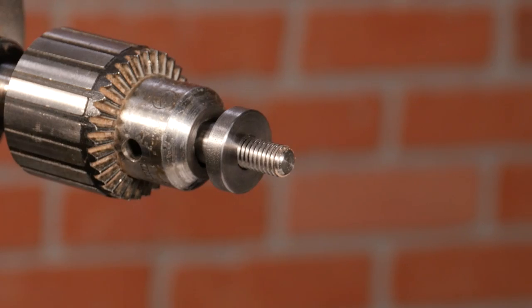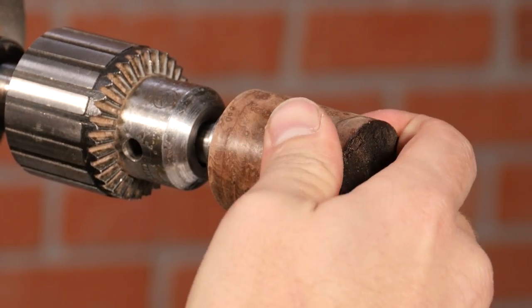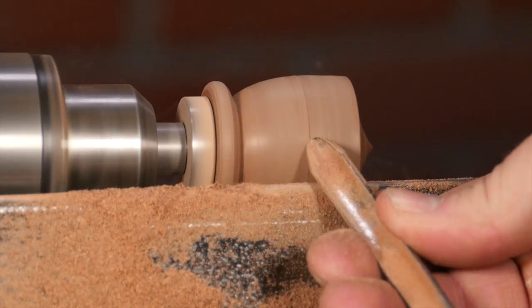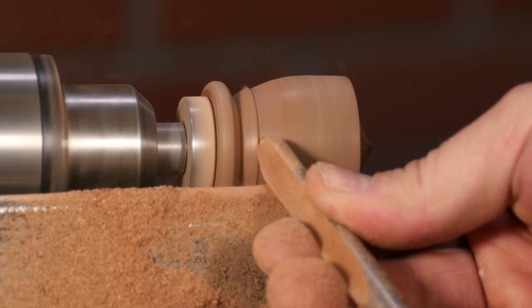With the threads all cut, you can mount the blank to the threaded mandrel and the headstock and turn your project to shape. Just take light cuts to avoid stripping those threads.